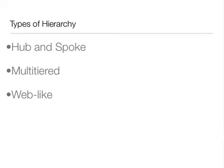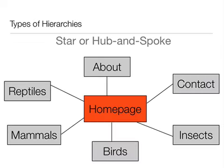There are three main types of hierarchies: hub-and-spoke, multi-tiered, and web-like. The star, or hub-and-spoke hierarchical structure, has all pages linked off of a central home page. There is only a single level or tier in the hierarchy, which means that this type of hierarchy is best for smaller websites with only a few pages.